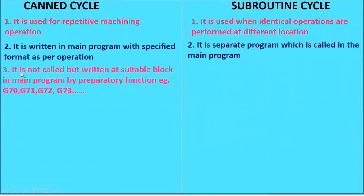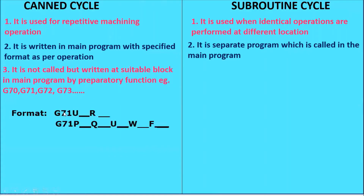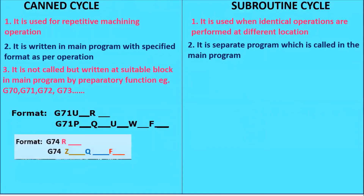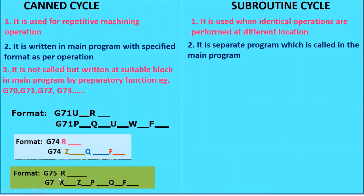The CAN cycle is not called but written at a suitable block in the main program by proprietary functions. In the CAN cycle, G70, G71, G72, G73, G74, and so on are used — these are standard formats in the proprietary function. G stands for proprietary functions and the formats are fixed. G71 is used for the stock removal or multiple turning cycle; G74 is for the peck or deep drilling cycle; G75 is for the grooving cycle or deep grooving cycle. The formats are fixed, which is in the proprietary function.